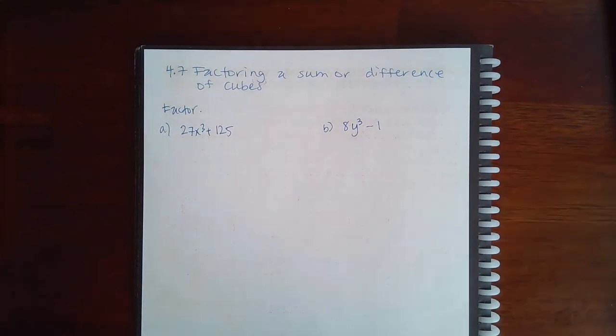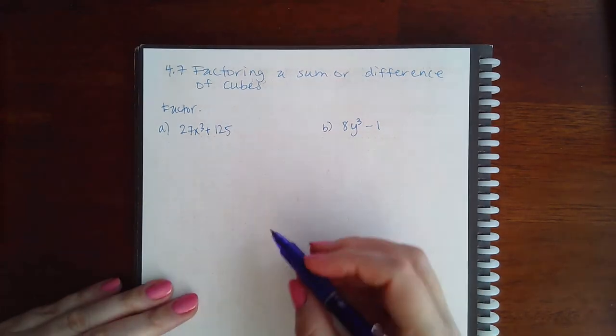Here we have 4.7 factoring a sum or difference of cubes. Now sum and difference of cubes have their own formulas.